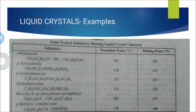The third example is paraasoxyfinatol: C2H5O-C6H4-NO, with a transition point of 137 degrees Celsius and a melting point of 167 degrees Celsius. The fourth example is diethylbenzidine: C2H5NH-C6H4-C6H4-NHC2H5, with a transition point of 115 degrees Celsius and a melting point of 120 degrees Celsius. We also have mercury-containing liquid crystals and paramethoxycinnomic acid, with temperatures of 170 degrees Celsius and 186 degrees Celsius.